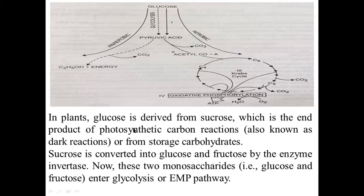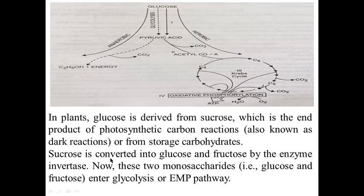In plants, glucose is derived from sucrose, which is the end product of the photosynthetic carbon reaction, also known as dark reactions or Blackman's reactions, or from storage carbohydrates. Sucrose is converted into glucose and fructose by the enzyme invertase. These two monosaccharides — glucose and fructose — then enter glycolysis, or the EMP pathway.